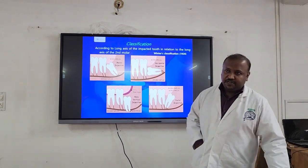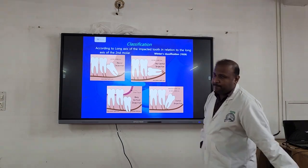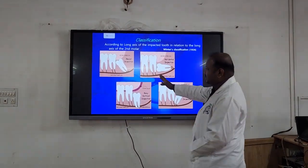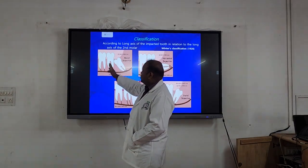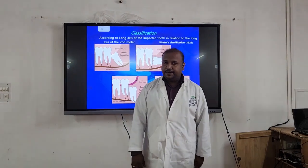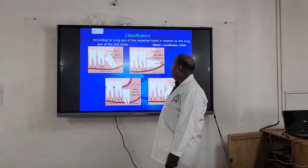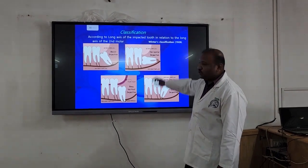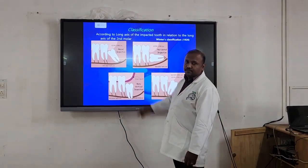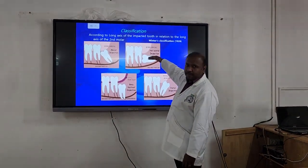This is the representation of the classification. These are angular impactions — you can see the molar values and how the angulation increases. The long axis of the second molar and the long axis of the third molar are tilted toward each other, and this is called a mesio-angular impaction. When the third molar is almost at 90 degrees perpendicular to the long axis of the second molar, we call it a horizontal impaction.